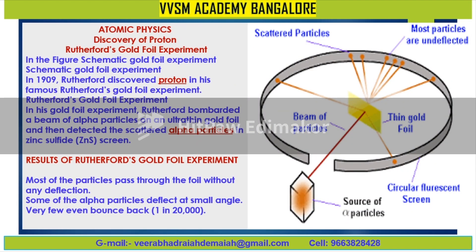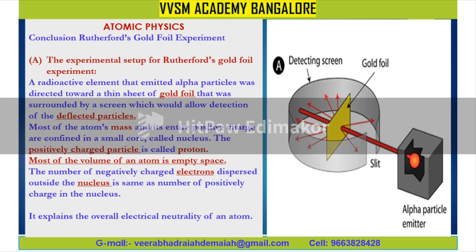Now I would like to divert your attention towards recollecting Rutherford's gold foil experiment. In 1909, Rutherford discovered the proton through the gold foil experiment, which we have already discussed. In this atomic physics topic, the experimental setup includes the deflected particles, the detecting screen, the gold foil, and the alpha particle emitter as the important components.